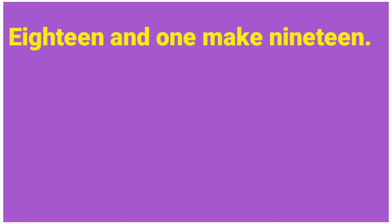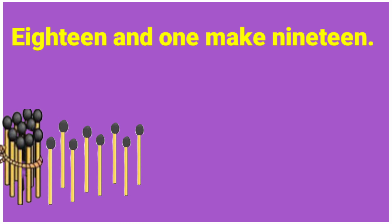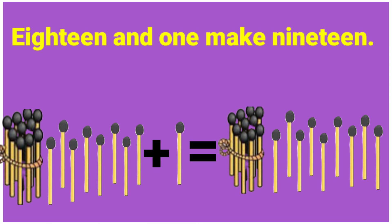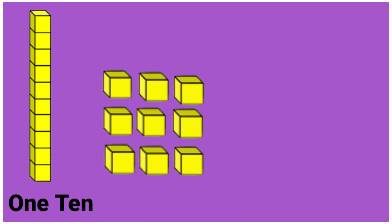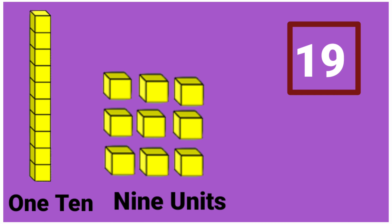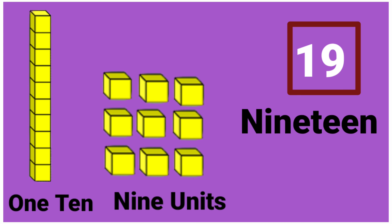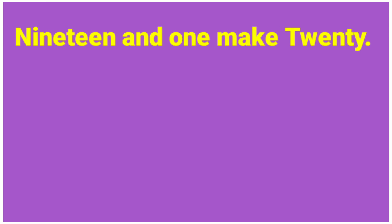18 and 1 make 19. 18 plus 1 is equal to 19. 1 ten and 9 units make 19. 19 in words: N-I-N-E-T-E-E-N. 19.